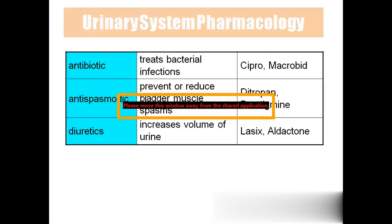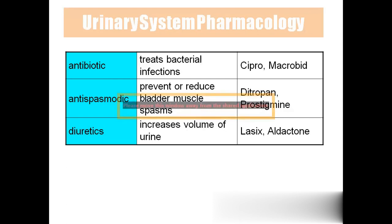Pharmacology: Antibiotics are prescribed for glomerulonephritis, cystitis, and urinary tract infections to treat bacterial infection. Antispasmodics reduce bladder spasm — involuntary muscle contraction of the bladder. Diuretics are given to patients with high blood pressure; they increase urine output, which decreases blood volume and therefore lowers blood pressure.